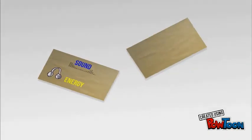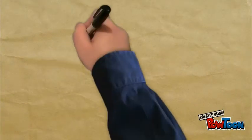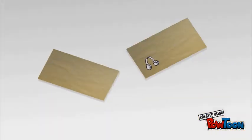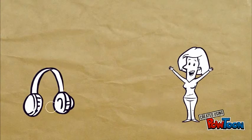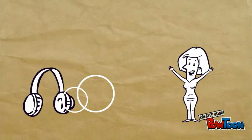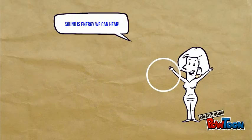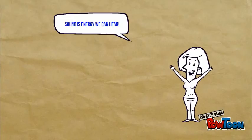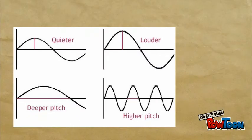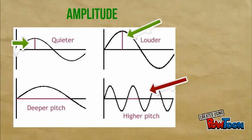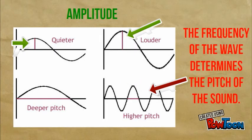Sound is energy. Sound travels in waves, and waves are made out of vibrating particles. Sound is energy we can hear — it travels in waves to our ear. As sounds make waves, we're able to measure them. The amplitude of the wave is how loud a sound is. The frequency of the wave determines the pitch of the sound.